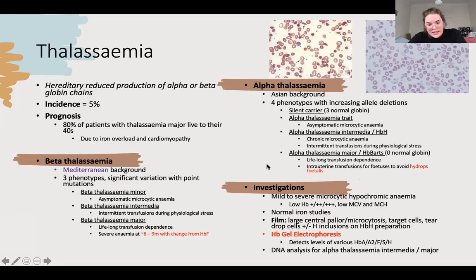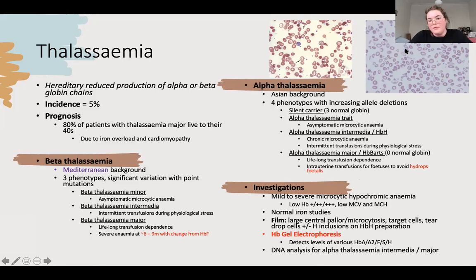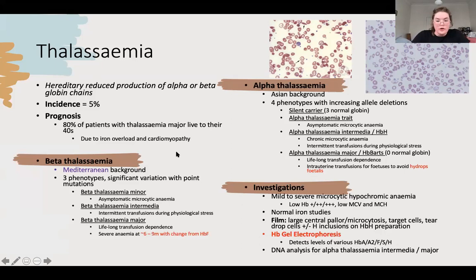Investigating thalassaemia: varying ranges of anaemia but generally microcytic. Iron studies will be normal - that's the key difference from iron deficiency. On blood film: lots of central pallor, key target cells, teardrop cells, and you can see sickle cells because dodgy haemoglobin can still form those chains. HB electrophoresis tests beta globin for both conditions; for severe or minor alpha, you need DNA analysis.